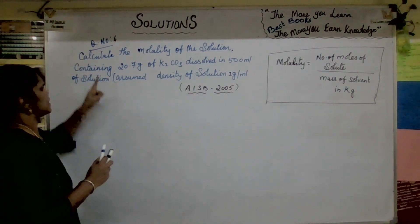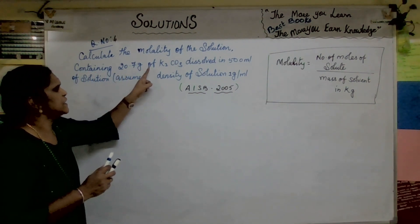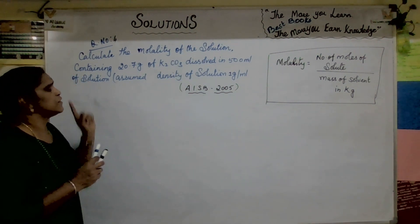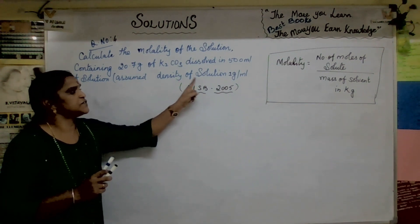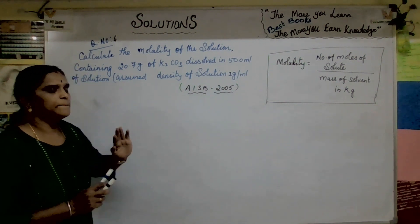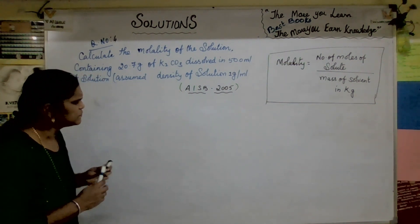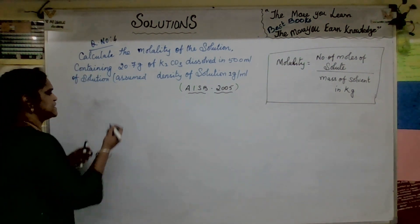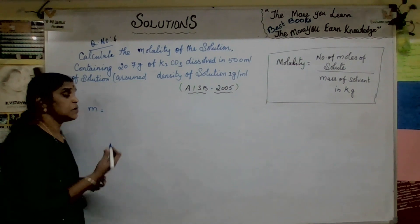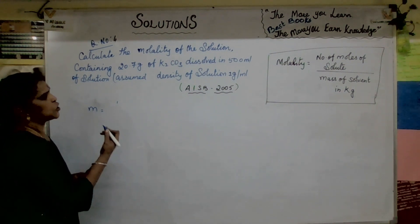Calculate the molality of the solution containing 20.7 grams of potassium carbonate dissolved in 500 mL of solution. Assume the density of solution is 1 gram per mL. Since density is given, recall that density equals mass divided by volume. Molality (small m) equals number of moles of solute divided by mass of solvent in kg.